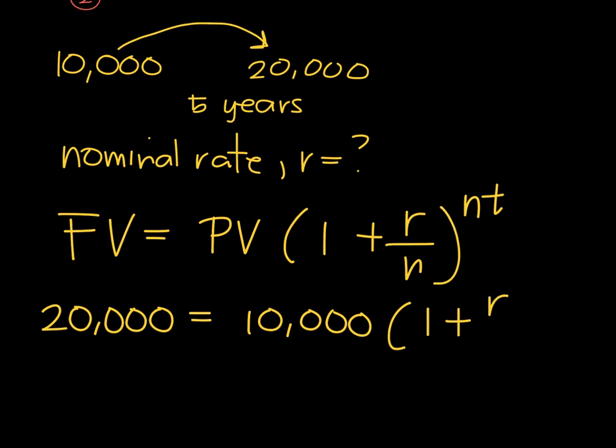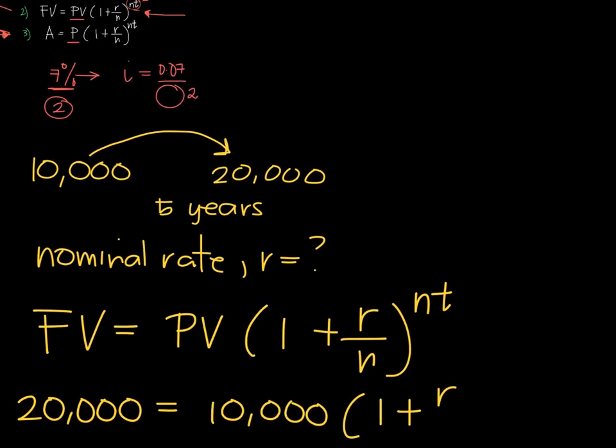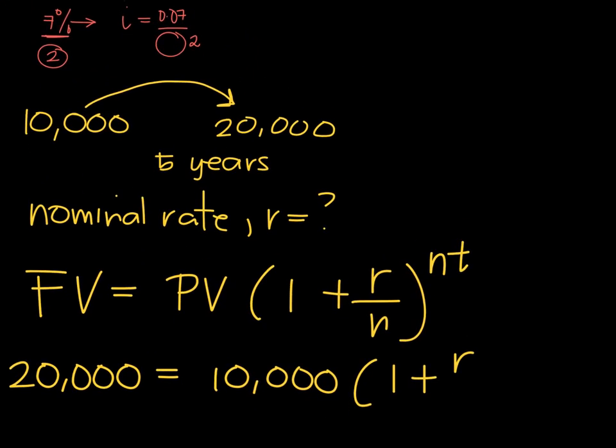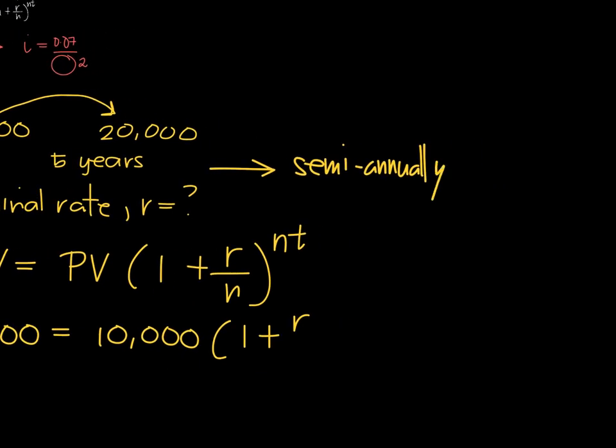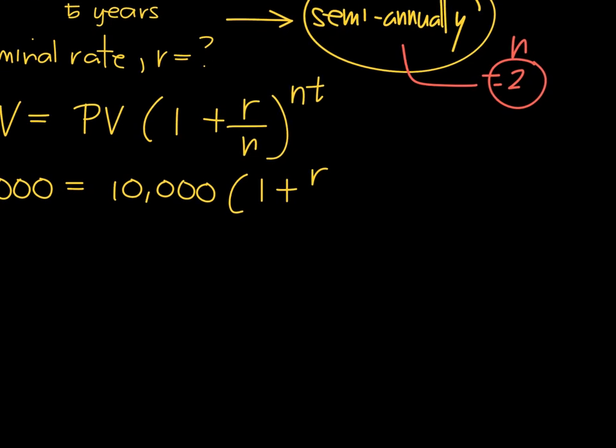I forgot to mention, let's say it is compounded semi-annually, so N equals 2. From R over N it becomes R over 2, raised to 2, and the time is 5 years, so I have 2 times 5 which becomes 10.